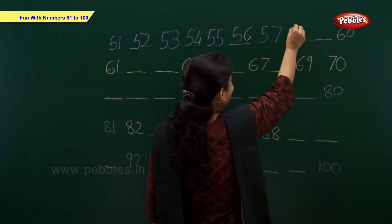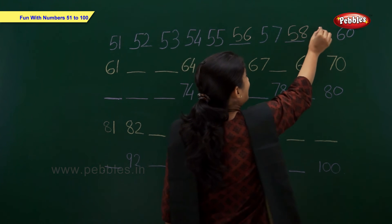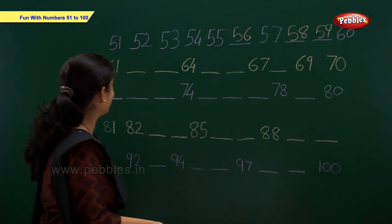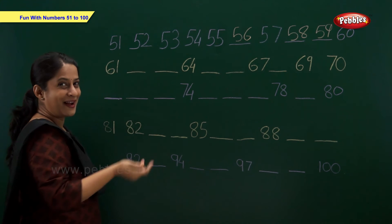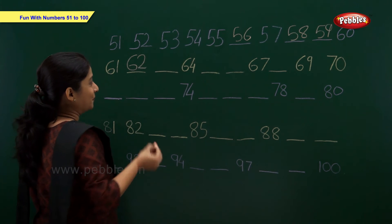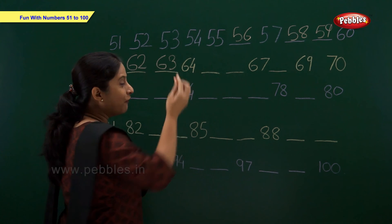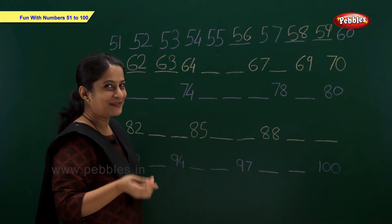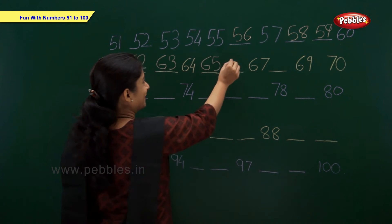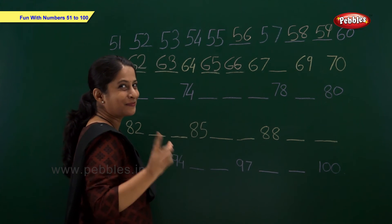58. And 59, 60. 61, right. 62, 63, 64. 65, 66, 67.